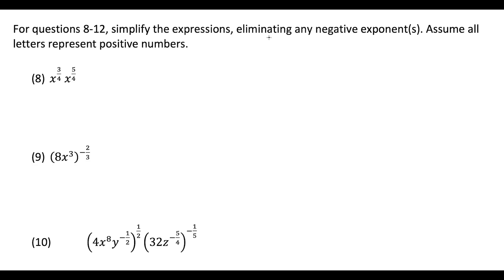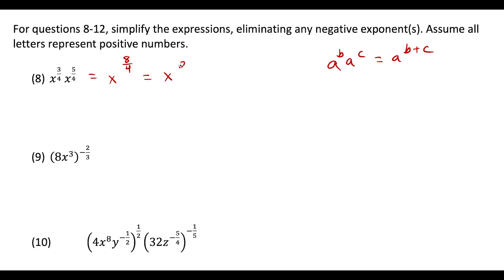Questions 8 through 12 we simplify expressions with no negative exponents in our answers, assuming each letter represents a positive number. For question 8, we're multiplying exponent terms using the rule a^b times a^c equals a^(b+c). Adding 3/4 plus 5/4 gives 8/4 — be careful not to add the denominators, just add the numerators and keep the common denominator. Since 8/4 = 2, our solution is x squared.